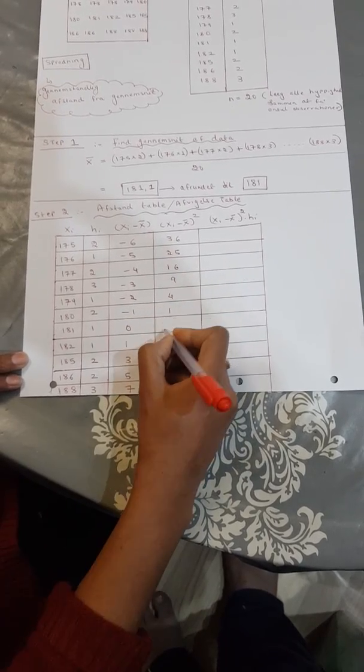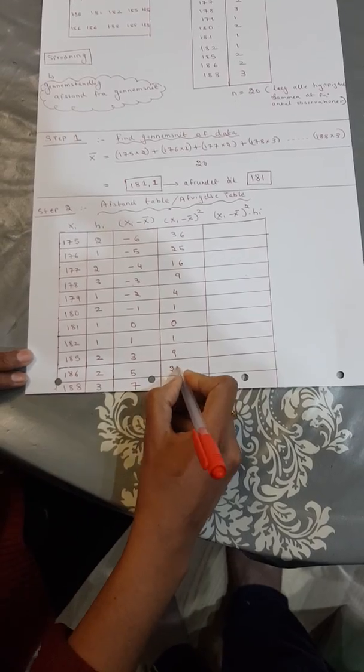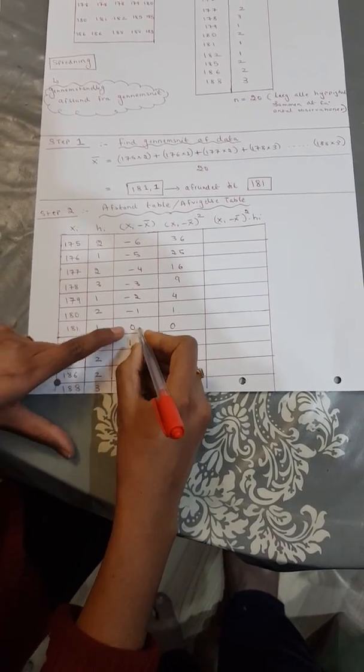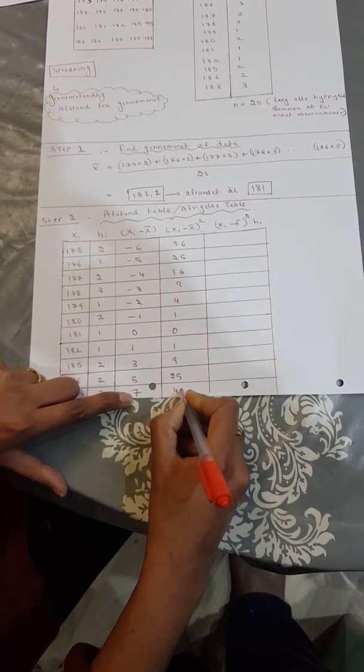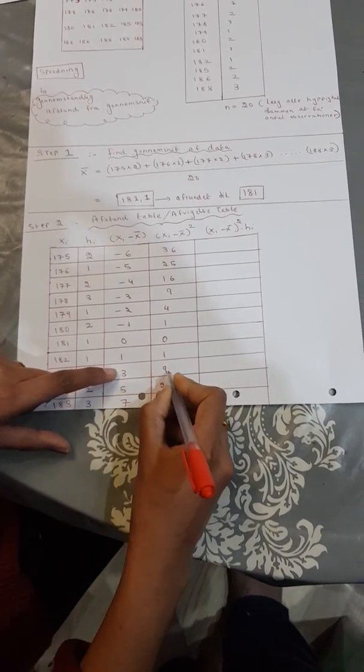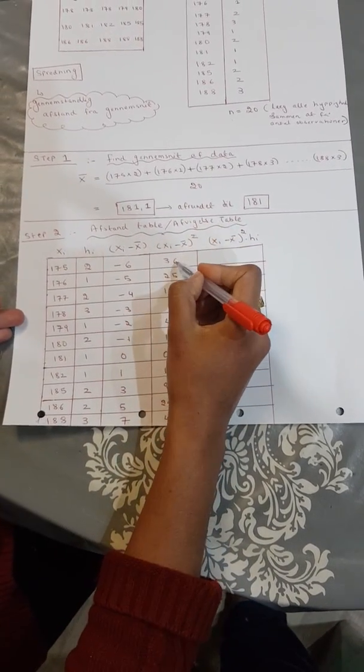Okay? 4, 1, 0, 1, 9, 25 and so on. 1 squared is 1, 2 squared is 4, 3 squared is 9. 7 squared is 49, 5 squared is 25, 3 squared is 9. Now we have the full squared values.